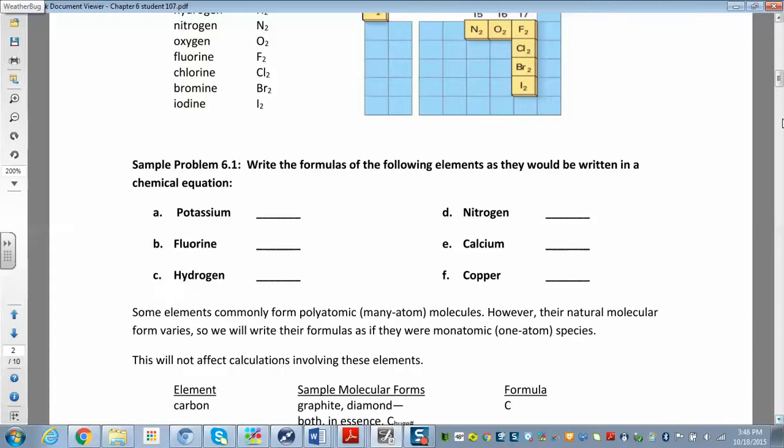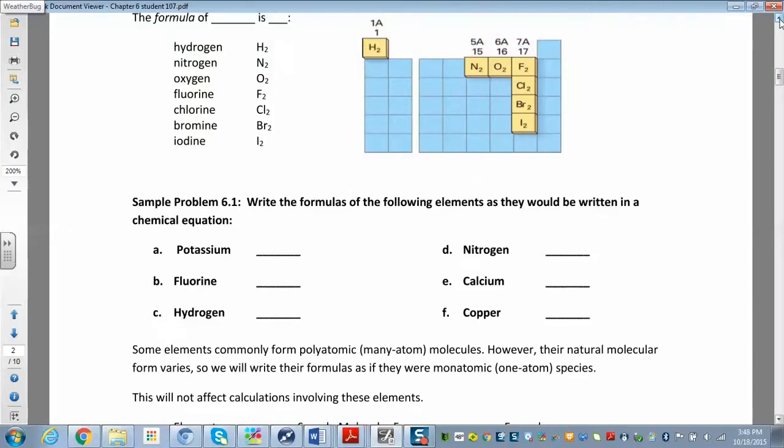All right. So let's see. When does that come into play? If we want to write the formulas for the following elements as they would appear in a chemical equation. Potassium? Is that a special one? No, that's just K. Fluorine is special, right? Fluorine is diatomic. So if I said fluorine reacts with nitrogen, I'm talking about F2. Hydrogen is H2. Nitrogen is N2. Calcium is just calcium, and then copper is just copper. There's nothing special about those.